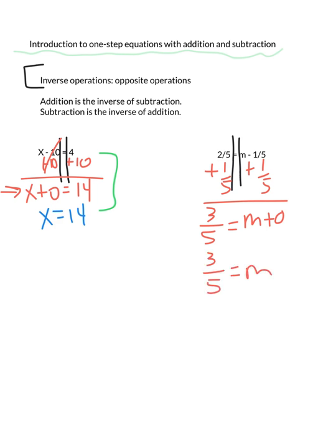You can go ahead and check your work. x minus 10 is 4. If we say that x is 14, we have 14 minus 10 is 4. We do see that 4 is 4. Because it balances on both sides, we know that we do have the correct answer.